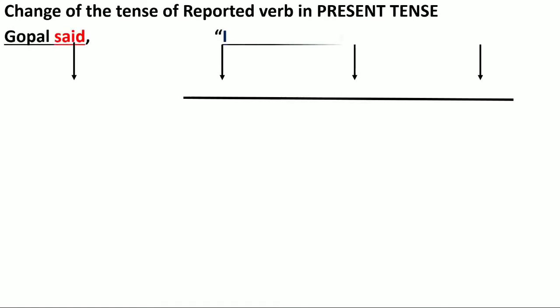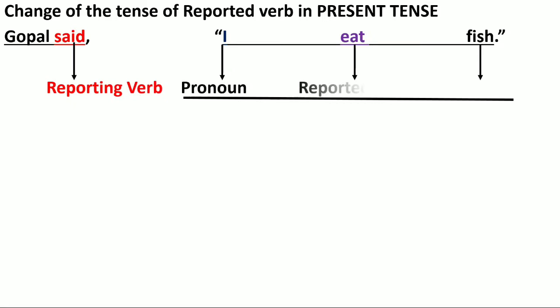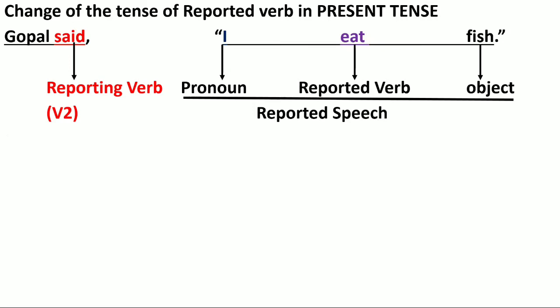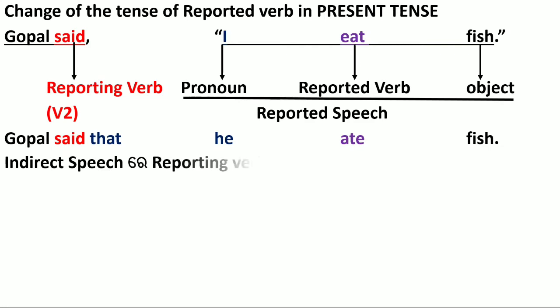Gopal said, 'I eat fish.' Here 'said' is the reporting verb, 'I' is the pronoun, 'eat' is the reported verb in first form (V1), and 'fish' is the object. The reporting verb is in second form. In indirect speech: Gopal said that he ate fish.